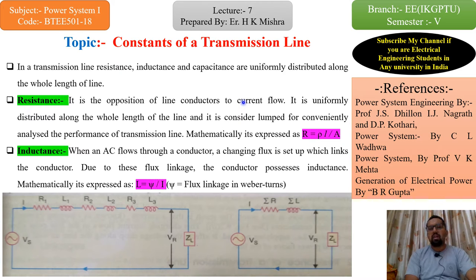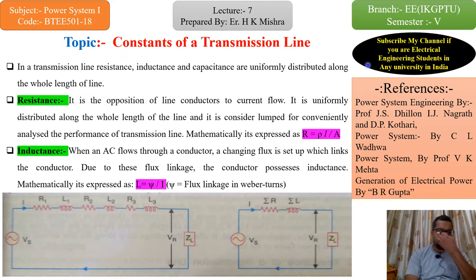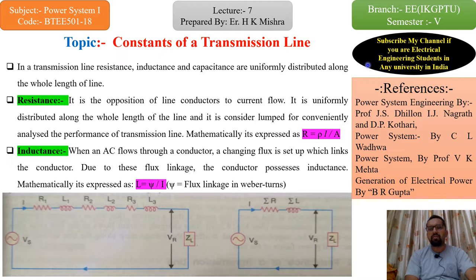So, before going to start an overhead transmission line, we will know about the constants of a transmission line in overhead systems. The main topics in Module 2 are: first, electrical components; then mechanical components; and then the relation between electrical and mechanical components of a transmission line. If you are a student or faculty of Electrical Engineering across the country, in any university, kindly subscribe my channel because I am going to start different sections of other universities also in future. It will be very beneficial for you.